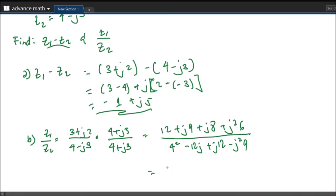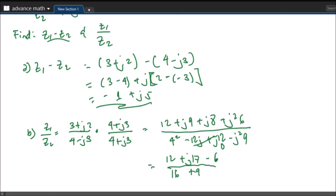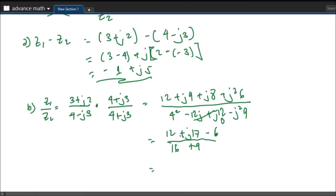So we will have 12 plus combining like terms that will be J17 minus this negative 1. J squared is negative 1, so negative 6 over 16 plus 9. So our final answer will be 12 minus 6, that will be 6 plus J17 over 25.